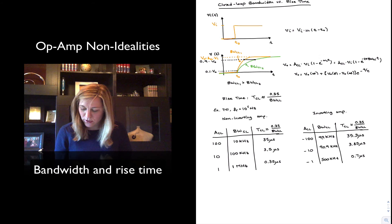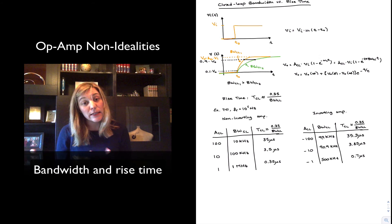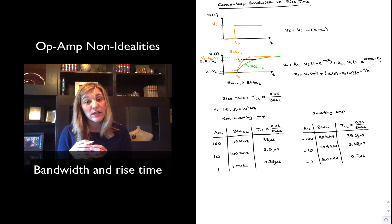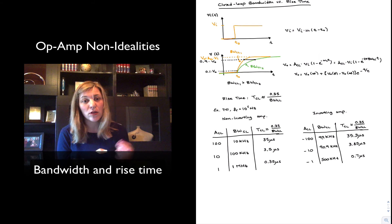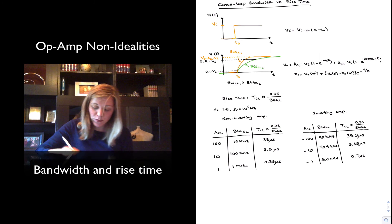Notice that if you take a look at the data sheet for an op amp, a lot of the time when they express the small signal bandwidth, they will have a note in the data sheet in the EC table, which basically tells you that the bandwidth was calculated using this expression.